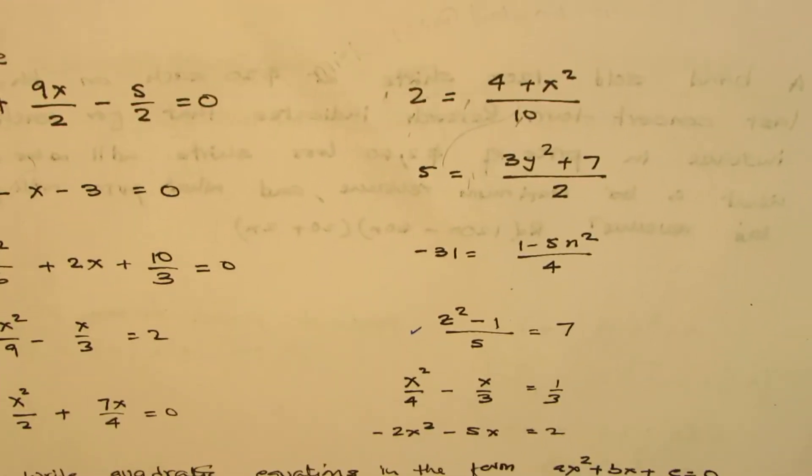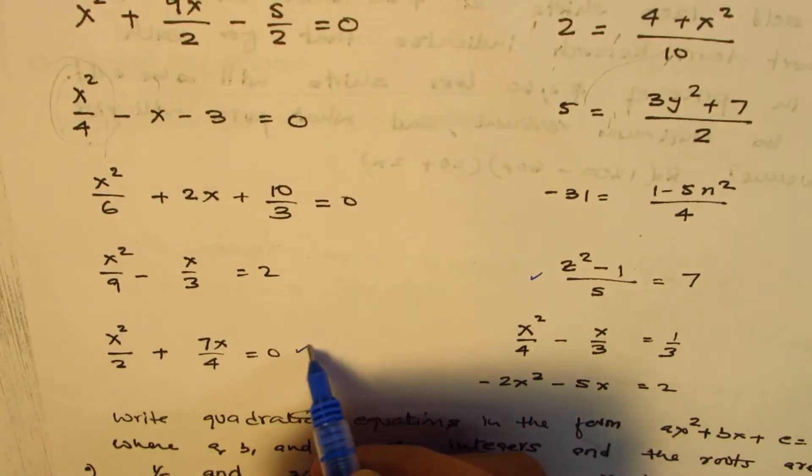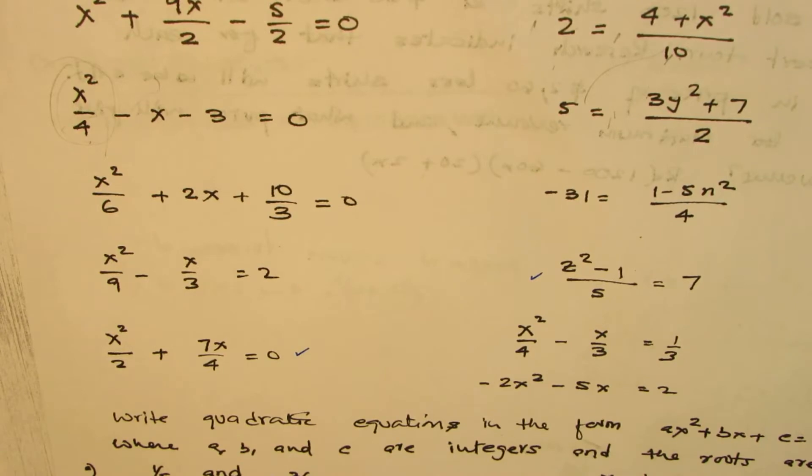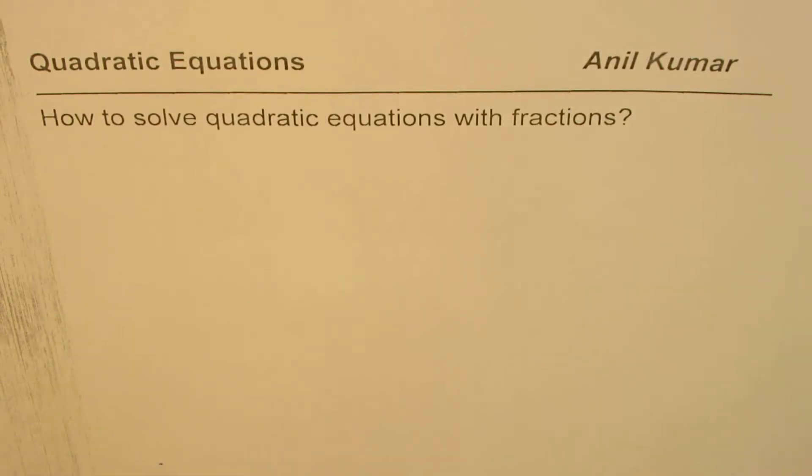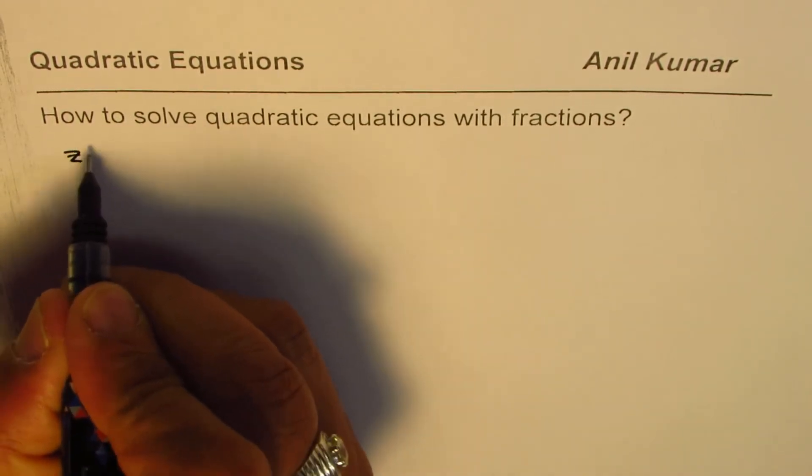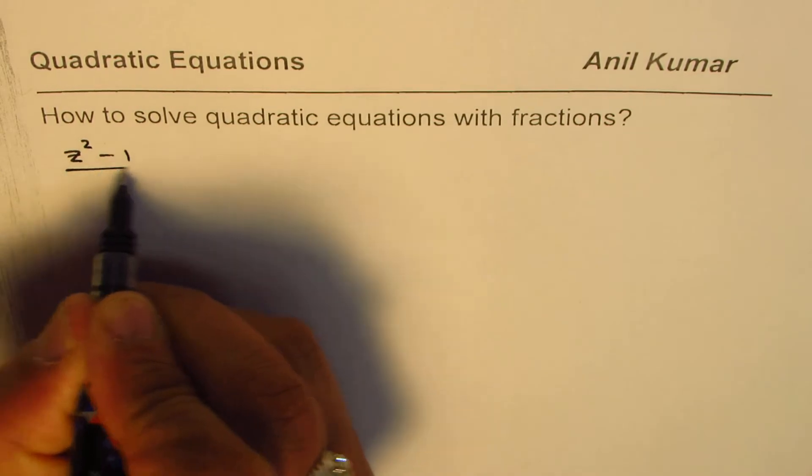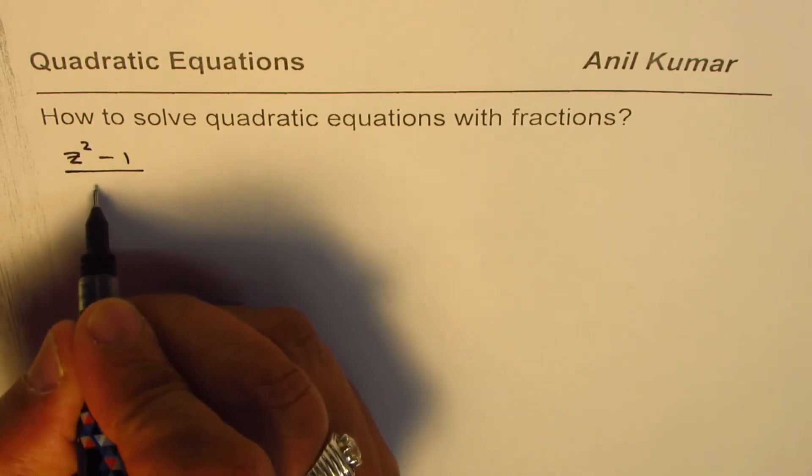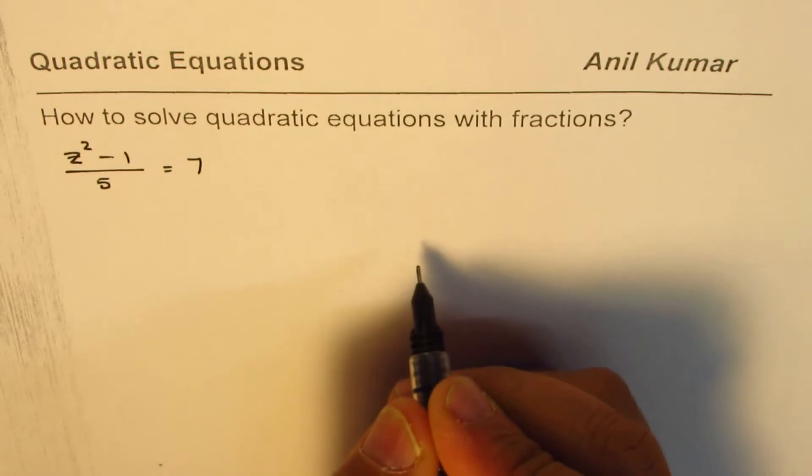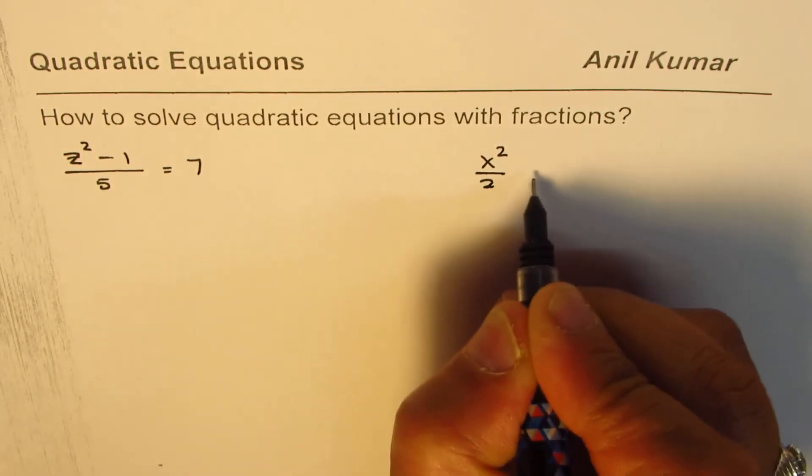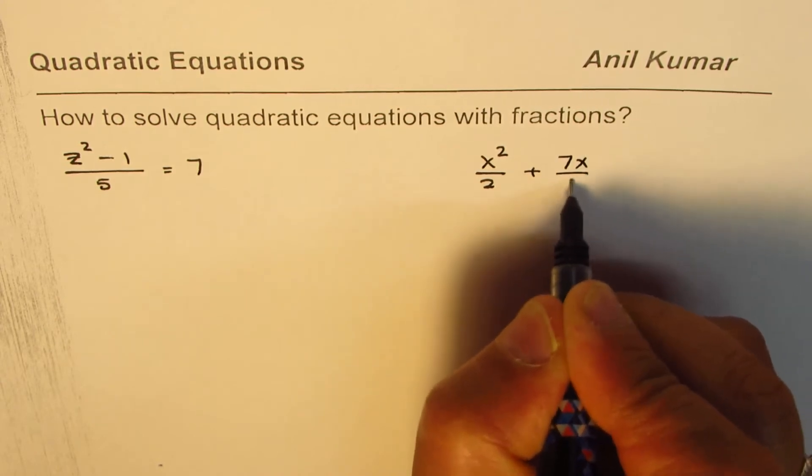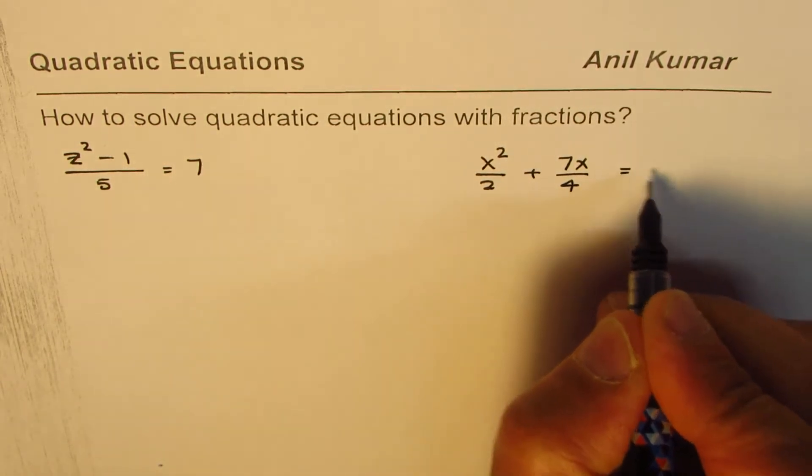So I'll take this up now. z squared minus 1 divided by 5 equals to 7 and let me take that one also. So we'll take these two equations and see how to solve them. So let's copy these equations and begin. So the first one here is z squared minus 1 divided by 5 is equal to 7. The other one is x squared divided by 2 plus 7x over 4 equal to 0.